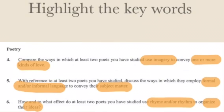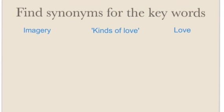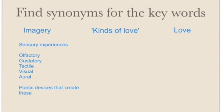For the sake of this video, I'm going to grapple with the first of those questions to look at the next step: finding synonyms for those keywords. We're really dealing with three core concepts — imagery, kinds of love, and love itself. For alternatives to the word imagery, you could use phrases like 'sensory experiences,' or get more specific and talk about olfactory, gustatory, tactile, visual, or oral images — the five senses with which we perceive imagery, and the ones a poet would appeal to.